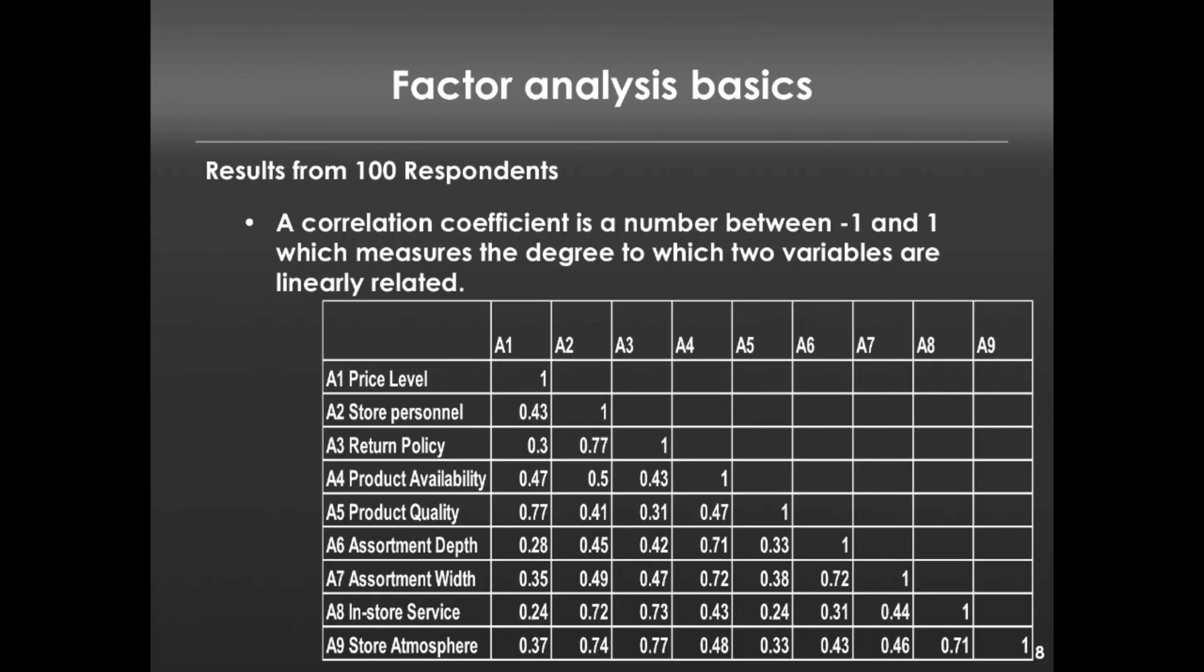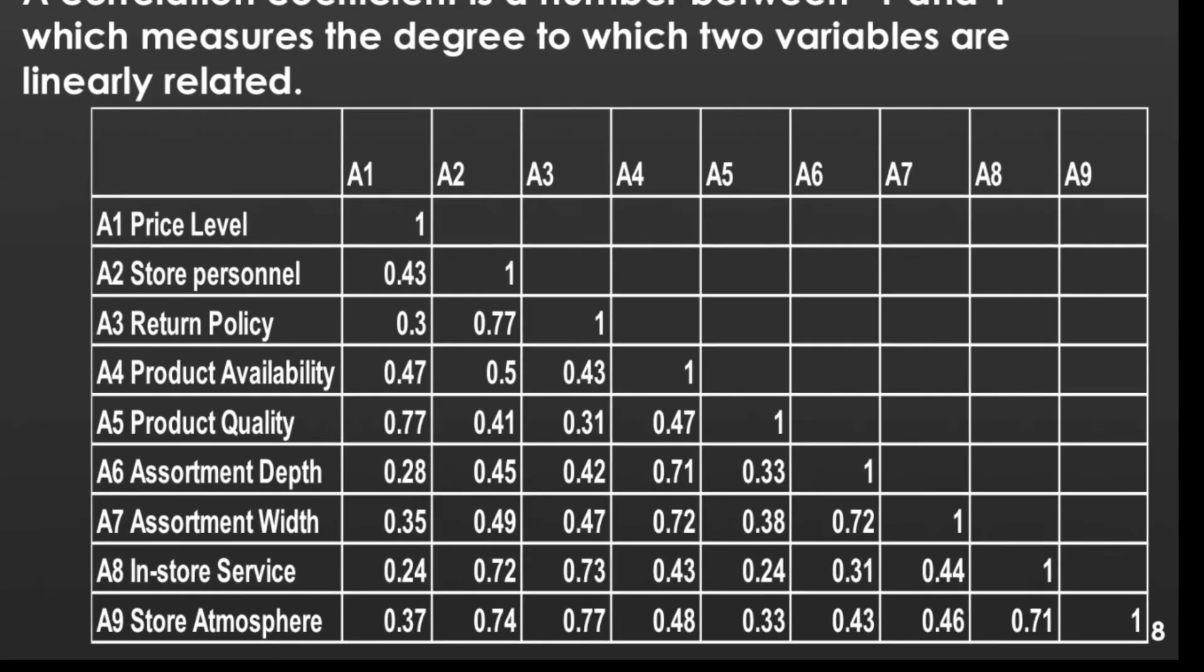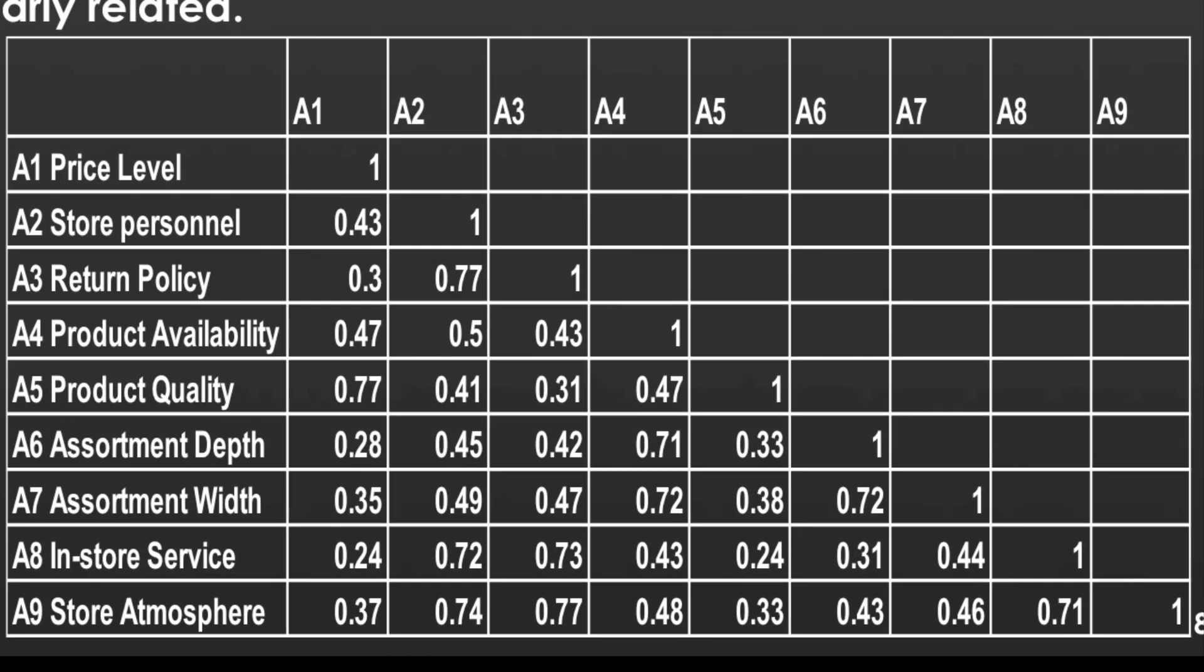It's going to create a correlation table, we've seen these already, and it's going to pull out values that are particularly large. So I know that's hard to see here, so I'll circle them for you. What this is basically saying is something like A5, product quality, is very related to A1, price level. A3, return policy, is very correlated to A2, store personnel, and so on.